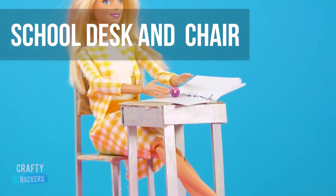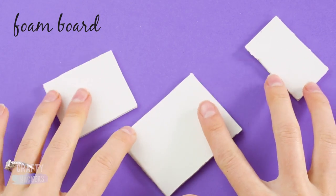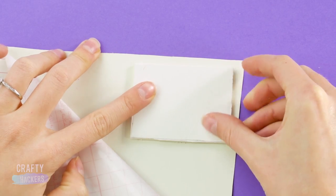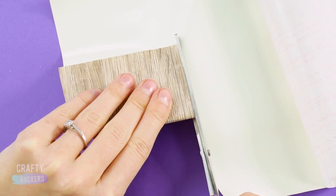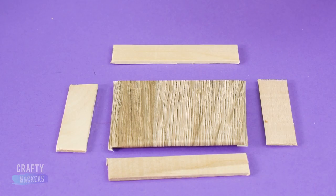School desk and chair. Barbie needs a desk and chair for her classwork, so cut out a few pieces of foam board like these. Measure and cut out some adhesive contact paper to give it that wood look. Cut some large popsicle sticks in half and set everything out.